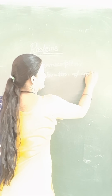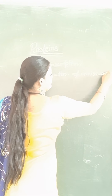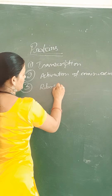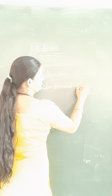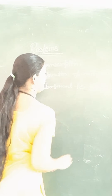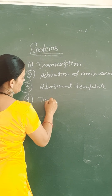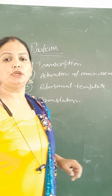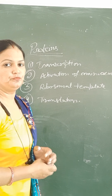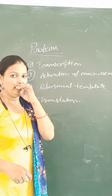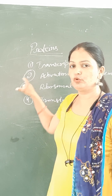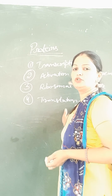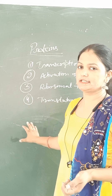Activation of amino acid, third one is the ribosomal template, and fourth one is the translation. Jo protein synthesis hai, that is actually known as translation. Translation process that is the actual synthesis of protein. Jo translation process hai usko complete hone ke liye aapke 4 steps hote hain.